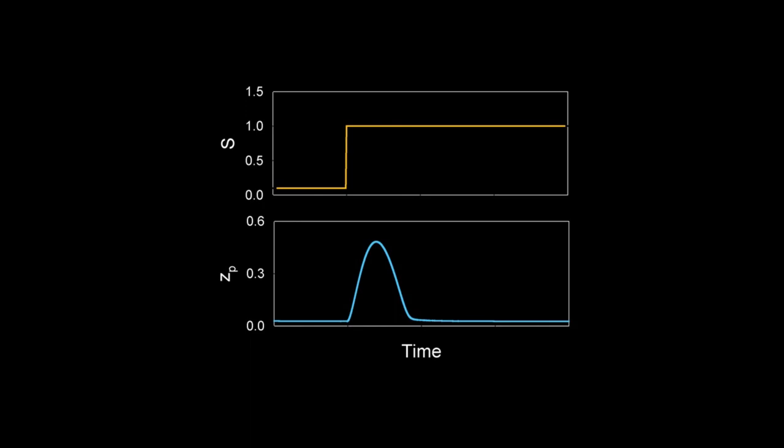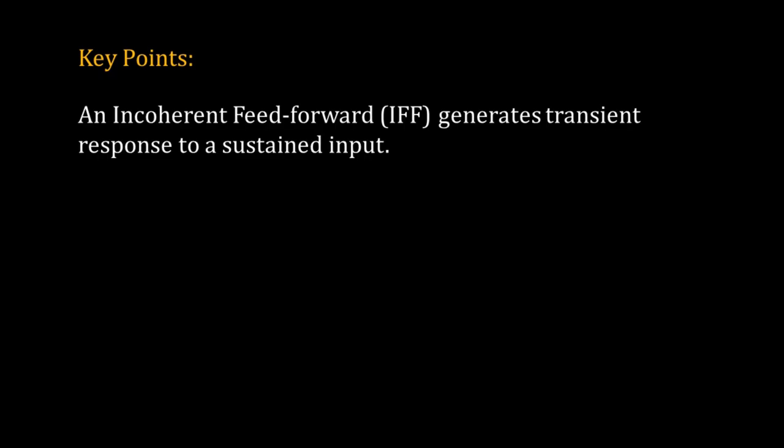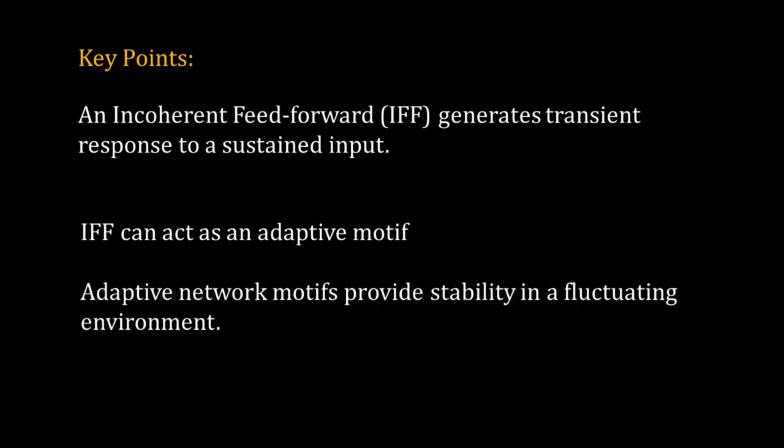Let's jot down the key points. An incoherent feed-forward generates transient response to a sustained input. Incoherent feed-forward can act as an adaptive motif. Adaptive network motifs provide stability in a fluctuating environment.